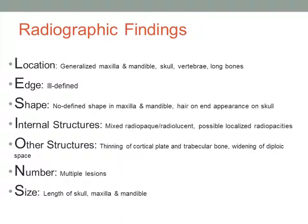Radiographic findings in patients with sickle cell anemia are generalized throughout the maxilla, mandible, skull, vertebrae, and long bones. Both edge and shape are not well-defined, but one unique feature is a hair-on-end appearance that radiates from the skull. Internal structures include mixed radiopaque and radiolucent lesions, as well as possible localized radiopacities. Other features include thinning of the cortical plate and trabecular bone and widening of the diploic space, which is another unique feature.